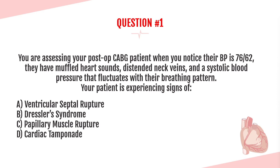Question number one. You are assessing your post-op CABG patient when you notice their blood pressure is 76 over 62. They have muffled heart sounds, distended neck veins, and a systolic blood pressure that fluctuates with their breathing pattern. Your patient is experiencing signs of: A, ventricular septal rupture; B, Dressler syndrome; C, papillary muscle rupture; or D, cardiac tamponade.